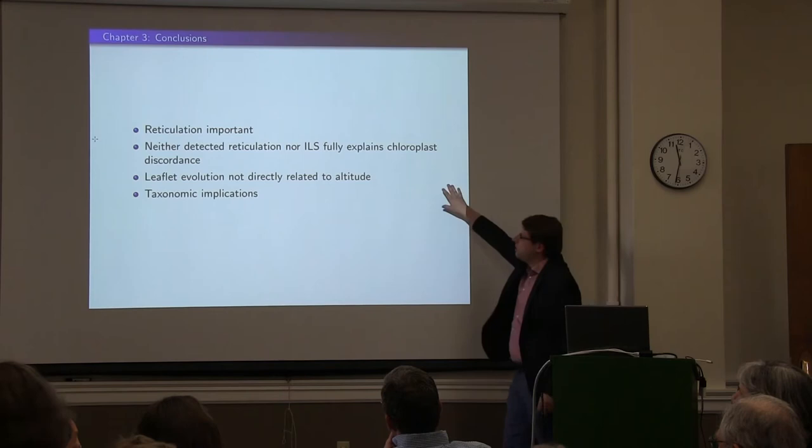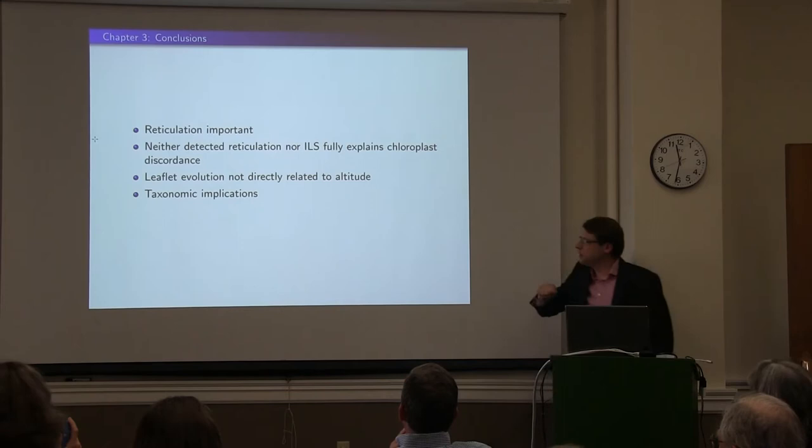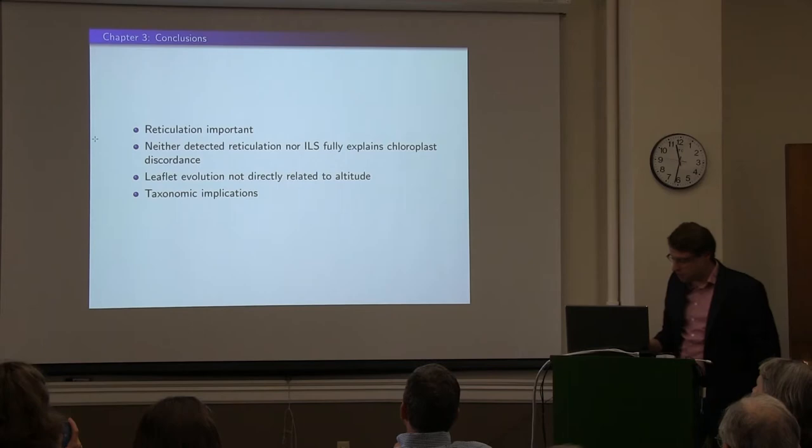In conclusion: reticulation is important in Polemonium, but neither the detected reticulations nor the chloroplast discordance tells the full story. Leaflet evolution is not straightforwardly related to altitude. Something I didn't talk about were some taxonomic implications — if you go back to the coalescent tree, there are two clades of Polemonium viscosum that are clearly not closely related: one in the intermountain region and one in the Rocky Mountain region.